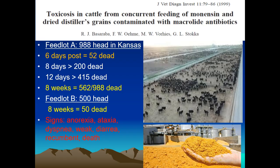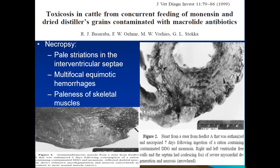The first case involves cattle at two feedlots in Kansas in 1999: monensin was fed with dried distillers grains contaminated with macrolide antibiotics. At the first feedlot there were 988 head of cattle; they started dying at six days after ingestion, and by week eight, 562 of the 988 had died. The main signs reported were anorexia, ataxia, dyspnea, weakness, diarrhea, recumbency, and death. In cattle, the main gross lesions are found in the heart.